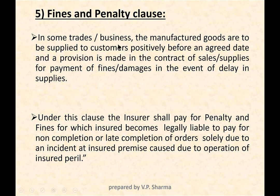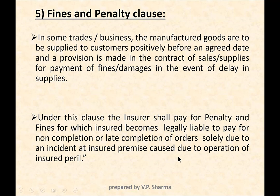The fines and penalty clause applies in trades where manufactured goods must be supplied to the customer before a specified date, with contractual provisions for payment of fines or damages for delayed supplies. Under this clause, the insurer shall pay penalties and fines for which the insured becomes legally liable for non-completion or late completion of orders solely due to an accident at the insured premises caused by the operation of an insured peril.